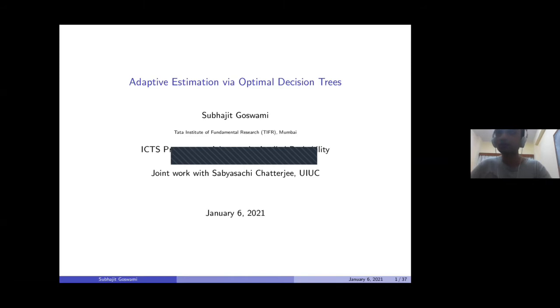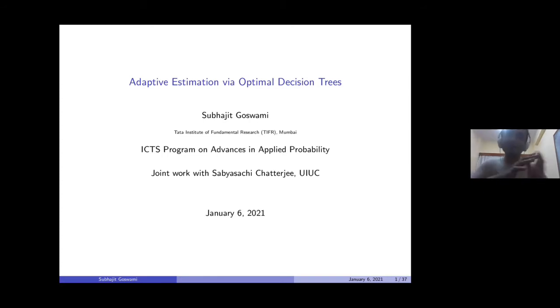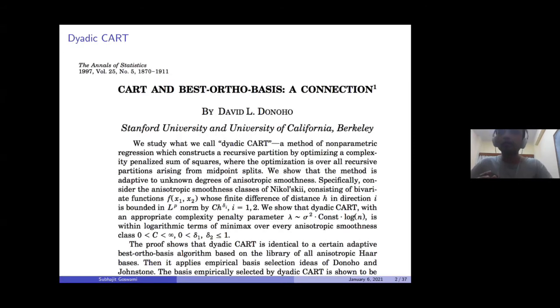Good evening and good morning to everybody. I thank the organizers for giving me the opportunity to talk about this work, because I think it's a topic I mostly work on — moments and probability theory — but another of my work that doesn't get much opportunity to be discussed is theoretical statistics. So thanks for that. The title of today's talk is 'Adaptive Estimation via Optimal Decision Trees,' and it's based on a recent work with a co-author at the Department of Statistics at UIUC. The primary motivation came from a quite famous paper by David Donoho published in Annals of Statistics back in 1997.